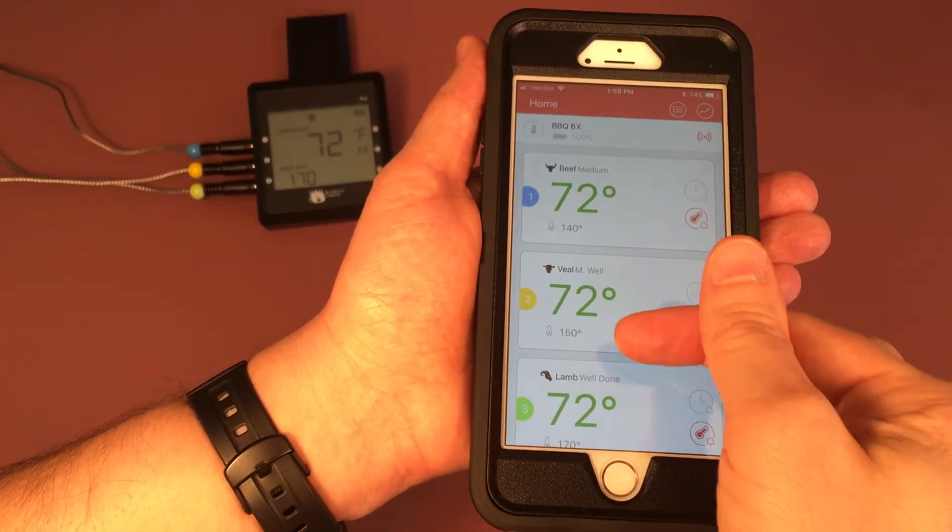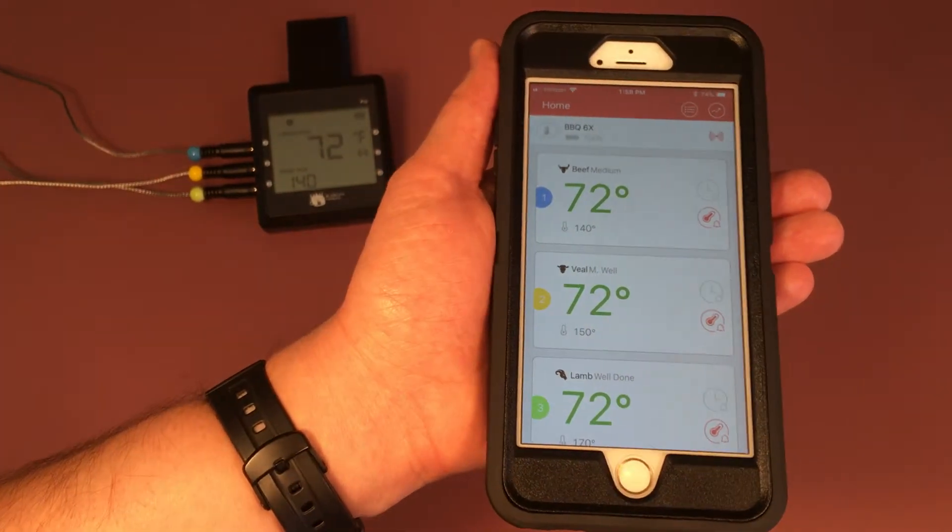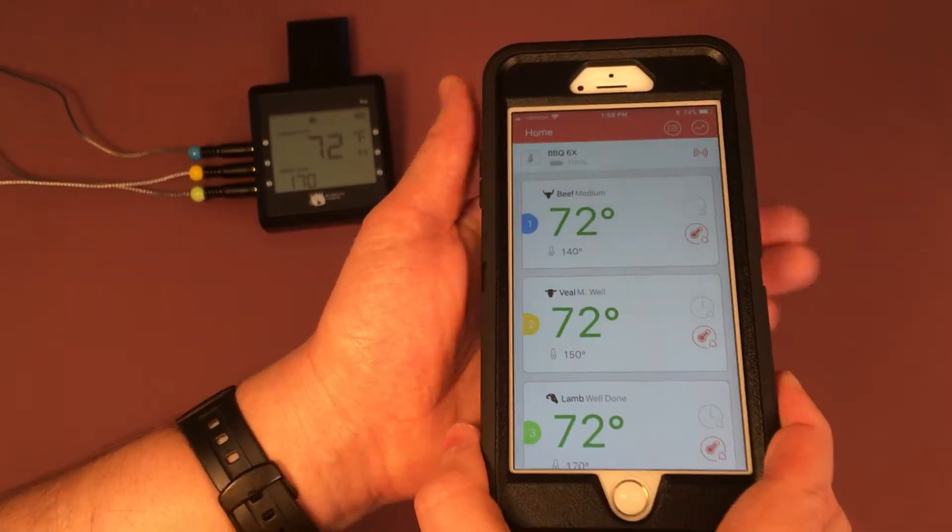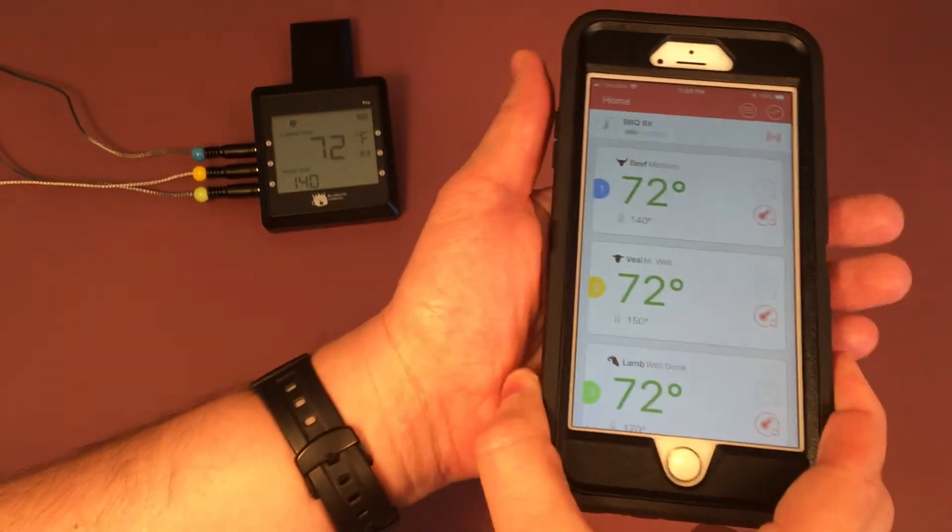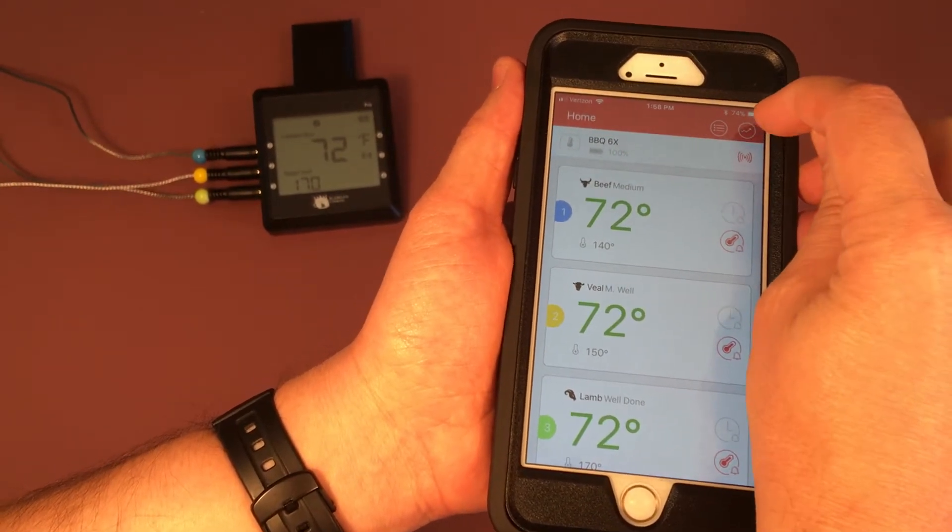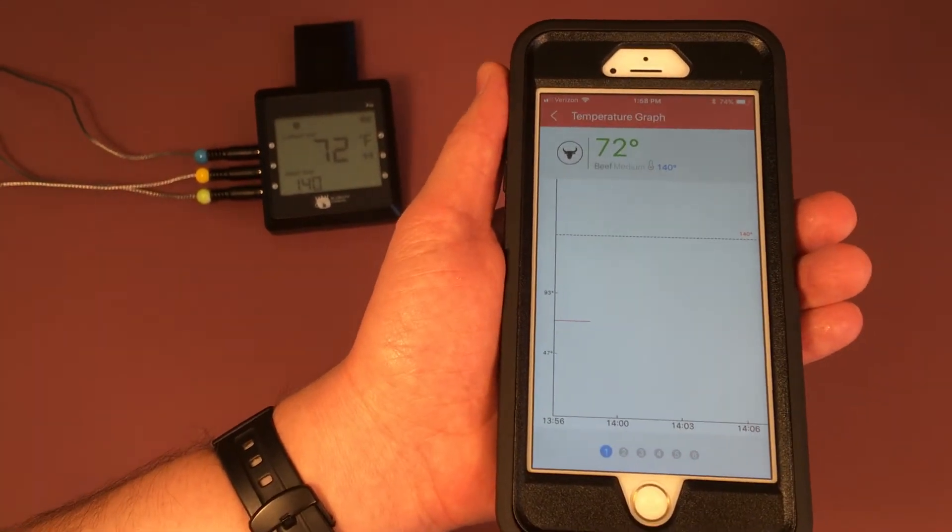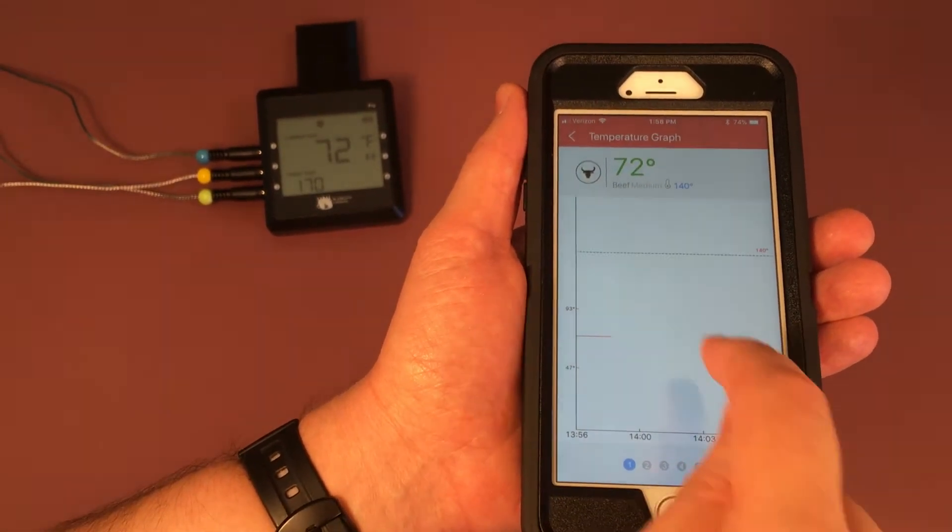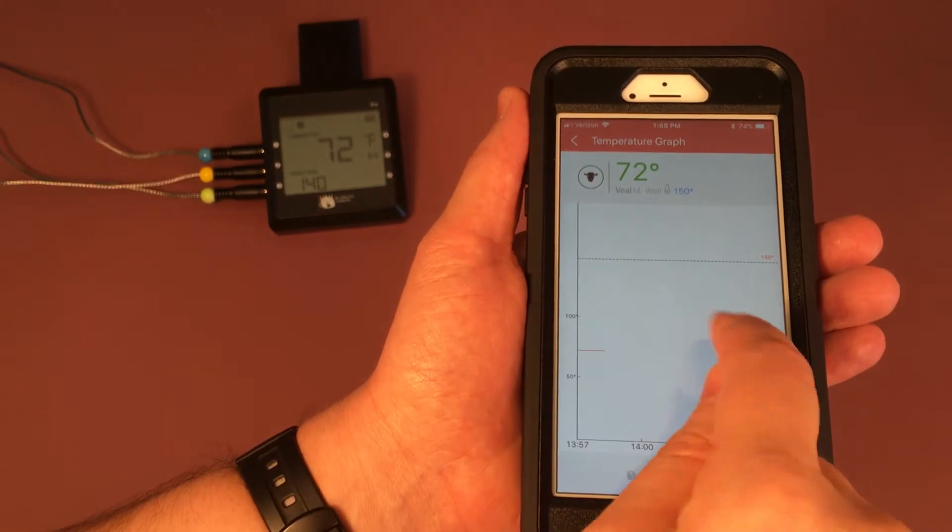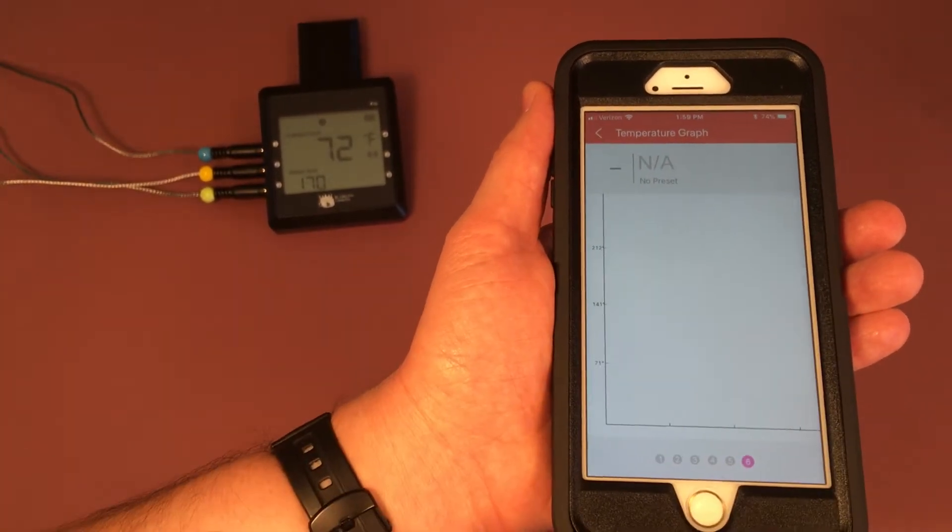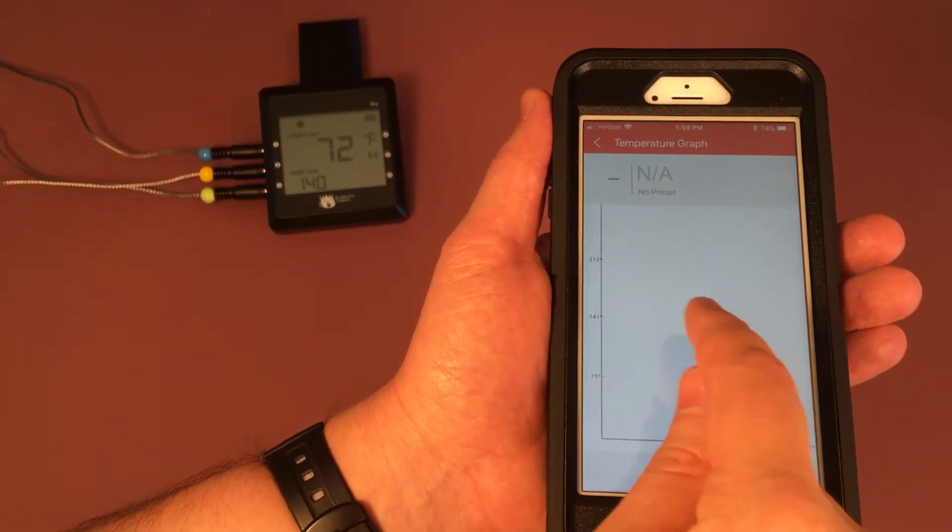Once it gets that temperature, your meat's done. So the other thing we want to do is go up here and hit this icon. That is the graph feature, and this will show you the progress of your temperature throughout the cooking. Of course it will actually have nothing there for the other three since we don't have probes in there, but you can swipe to each particular probe here.